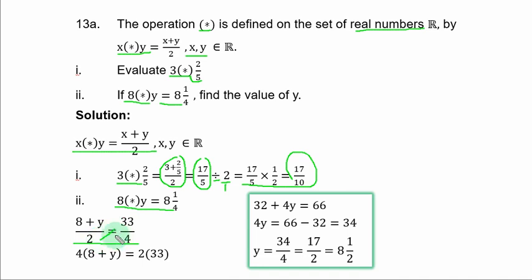To clear fractions, simply cross multiply, and you have this result. If you open the brackets, you have 32 plus 4y equals 66. Collect like terms, you have 4y equals 66 minus 32, and that is 34.